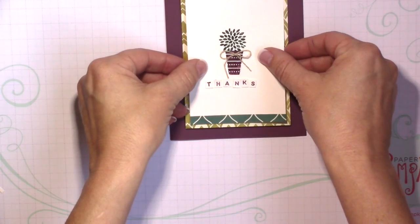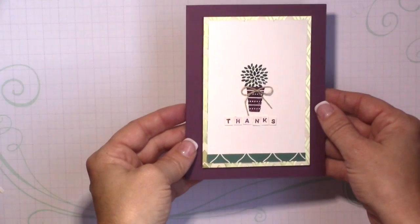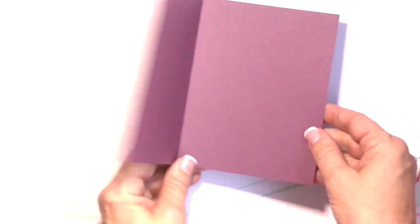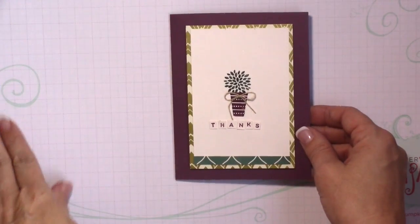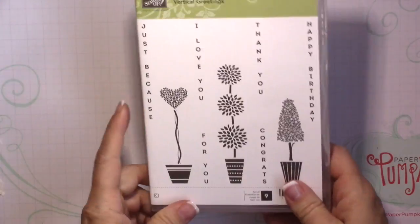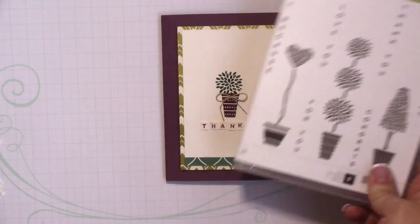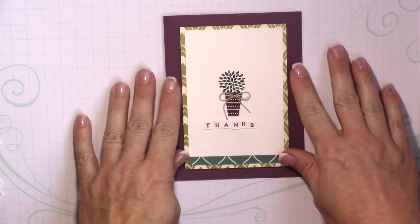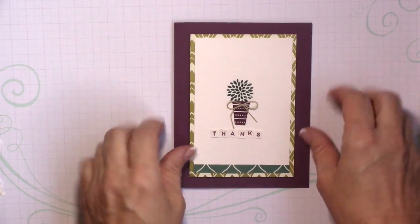All right so here I'm just adhering that into the middle of the card base just using Snail and there's the card, just really simple. Here you can insert a piece of white cardstock to write your message and I hope y'all like today's card that was using the Vertical Greetings stamp set and then items from the Eastern Palace Premier Bundle which you're able to order now. If you have any questions let me know, give it a thumbs up if you liked it and I appreciate y'all joining me. Bye!